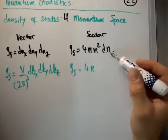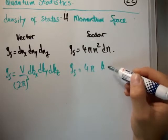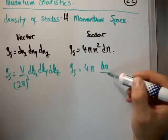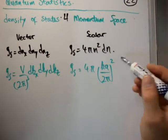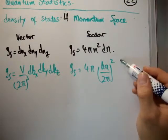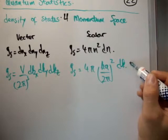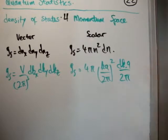And it's going to be g_s equal to 4π. Now n, so n was, let me think now, k times a over 2π squared, isn't that right? Yes, and then it was dk times a over 2π. Okay, so that's the density of states in scalar k space.